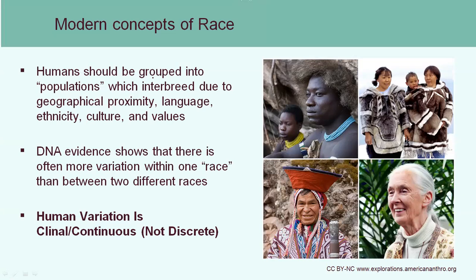DNA studies on different populations — populations you might consider to be one race versus a different race — show there's actually very little genetic difference between them, while within a racial group there can be some extreme differences. This shows that human evolution is quite complex. Even though race has a place in society for demographic questions like healthcare or access to resources, remember these are social constructs rather than biological ones.